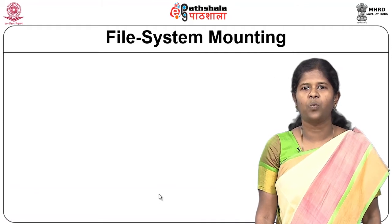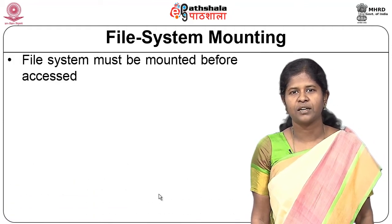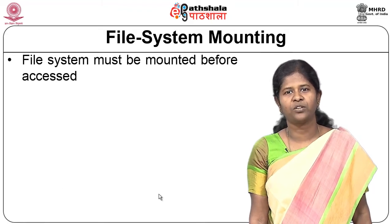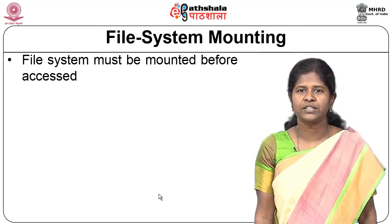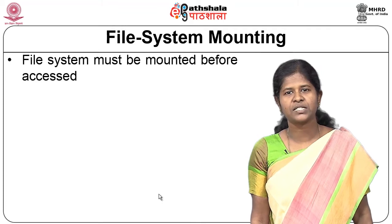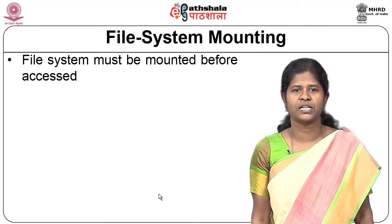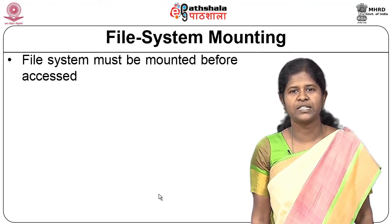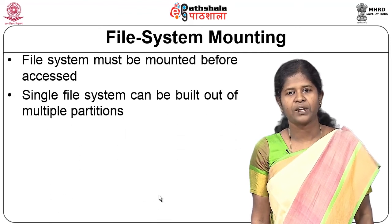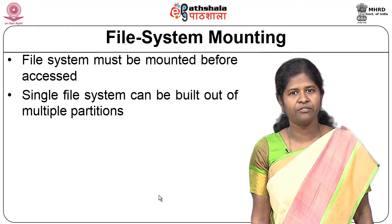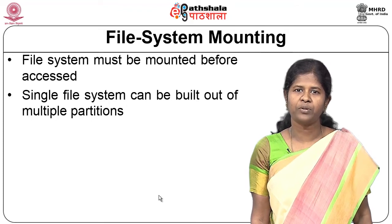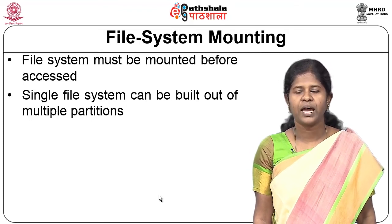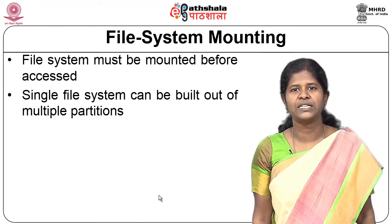First we will learn what mounting of file systems is. A file system is the most visible part of any operating system and you can have file systems in different places, in different partitions. You can have file systems in disk, you can have file systems in pen drives and so on. But to access a file system, the file system has to be mounted first. You can even have a single file system built out of multiple partitions, or you can have a number of file systems in each of the partitions.